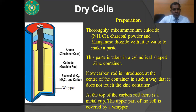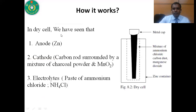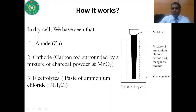At the top of the carbon rod there is a metal cap, and this upper portion is covered by a wrapper. By this process you can prepare a dry cell. In a dry cell, the zinc container acts as an anode, and the cathode is the carbon rod coated with a mixture of charcoal powder and manganese dioxide.